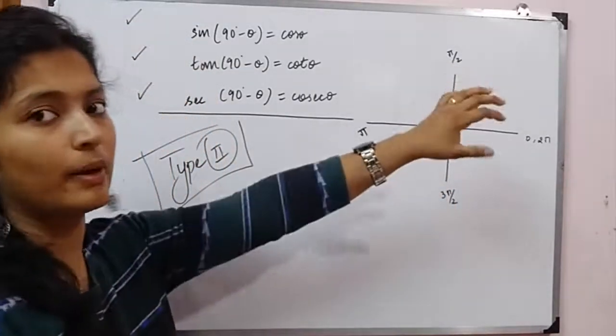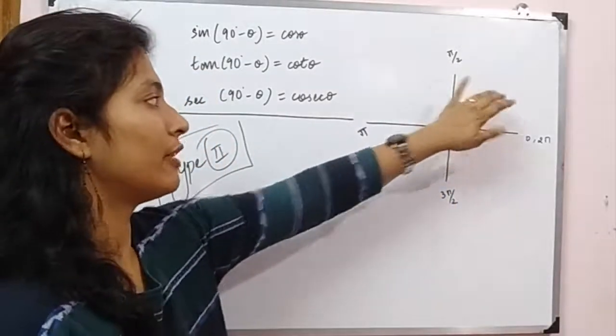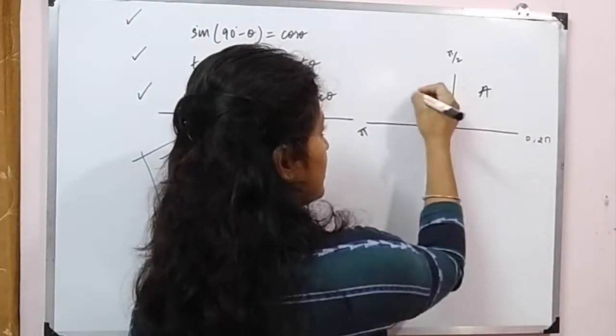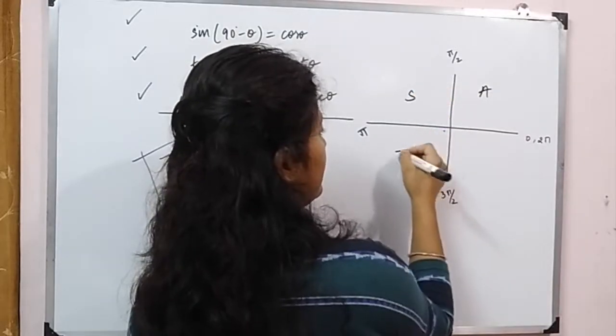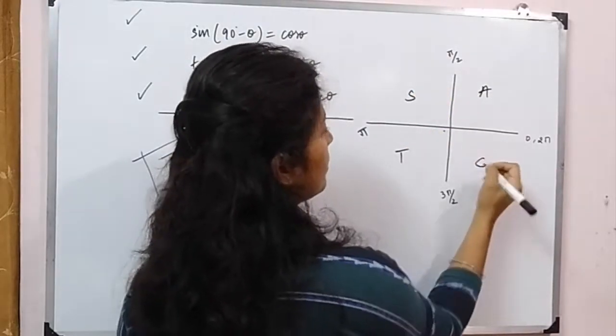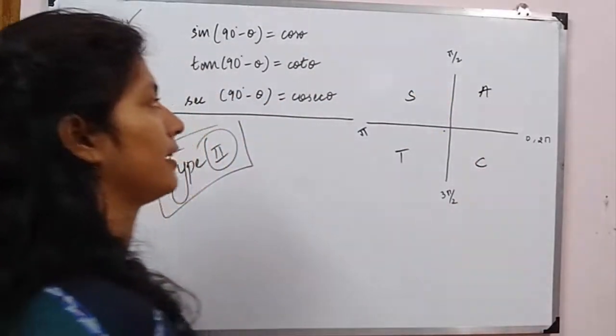We have a quadrant: 1, 2, 3, 4. In quadrant 1, all are positive. In quadrant 2, sine is positive. In quadrant 3, tan is positive. In quadrant 4, cosine is positive.